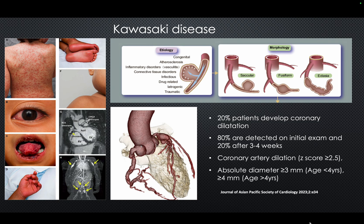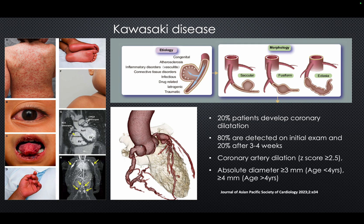I am going to discuss Kawasaki disease here, though not in full because it is a chapter in itself. Kawasaki disease is a disease where you have a fever lasting for more than five days and various cutaneous manifestations, including a rash, conjunctivitis, oral rash, erythema of the hands and feet with scaling, and lymphadenopathy. As cardiologists, we are interested in the dilatation of the coronary arteries, producing diffuse dilatation, ectasias, or aneurysms which could be fusiform or saccular in nature.